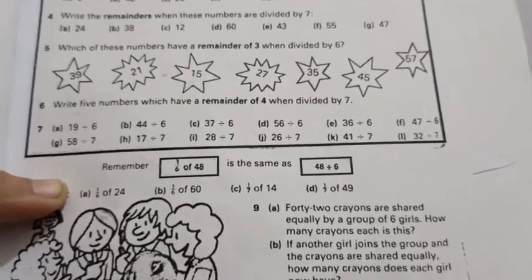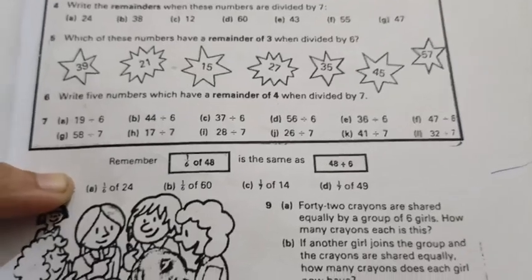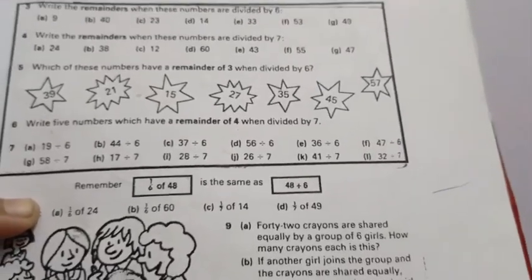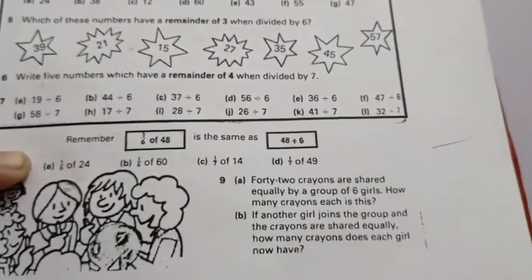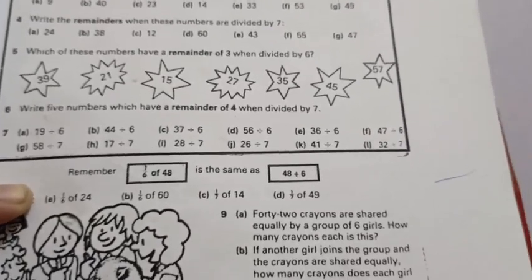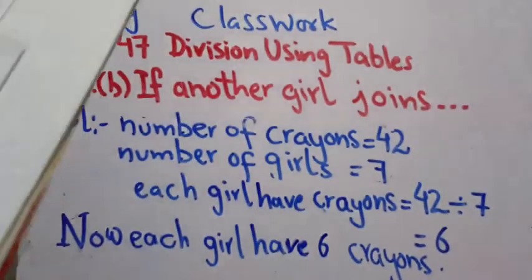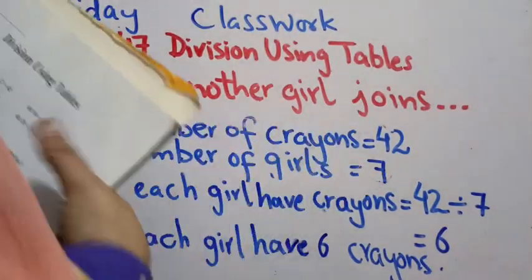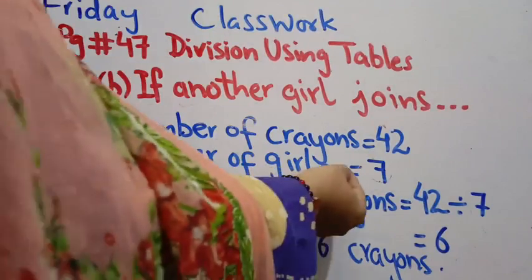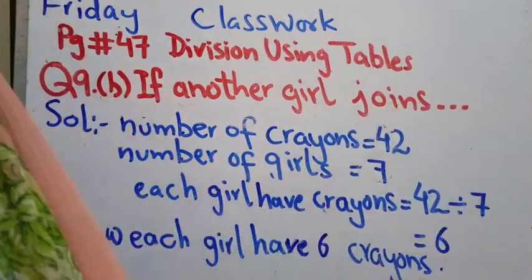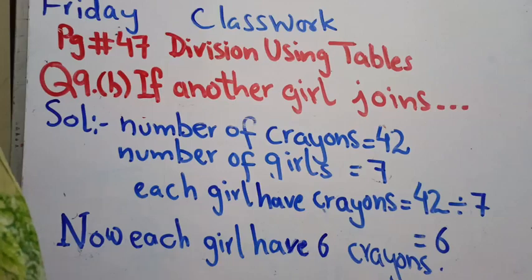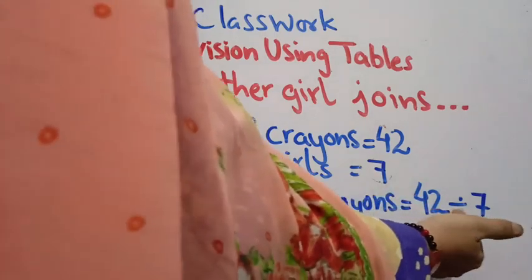You can easily give the answer mentally. I think you know the answer now. I have written the same - the question is the same, just the number of girls in a group has changed. Remaining question is the same and we have to divide 42 by 7 instead of 6.